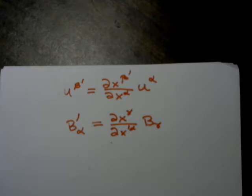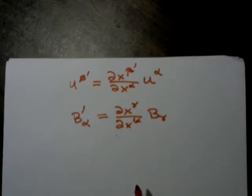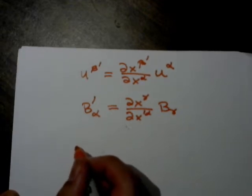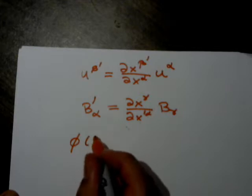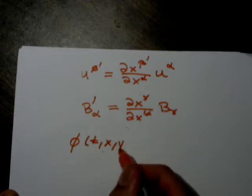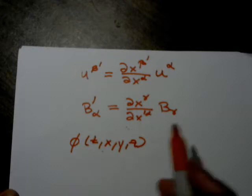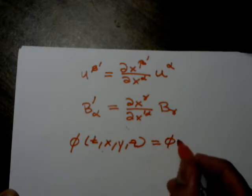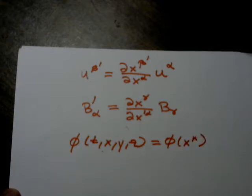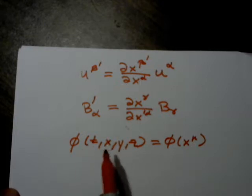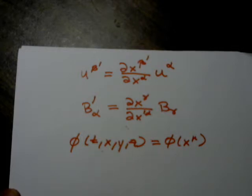One important type of quantity that transforms as a covector is the gradient of a scalar function. So let's write out a scalar function φ(t, x, y, z), which in component notation is φ(X^μ). We're considering an arbitrary scalar function of position whose value at any given event is frame independent.